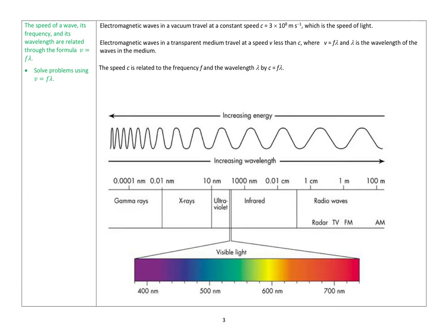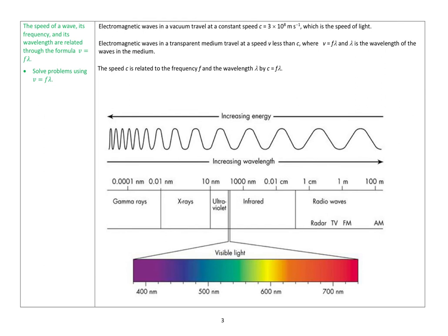In this last bit of the electromagnetic waves video, we are going to look at the wave equation, and I'm also briefly just going to talk about the electromagnetic spectrum, which isn't explicitly mentioned in the course, but I think it's very important to understand. The speed of a wave, its frequency and its wavelength, are related through the formula V equals F lambda.